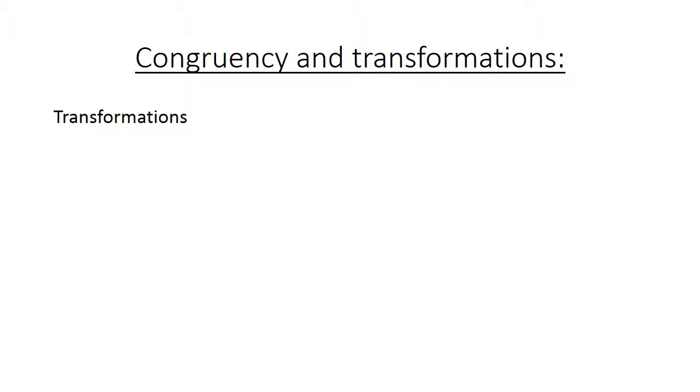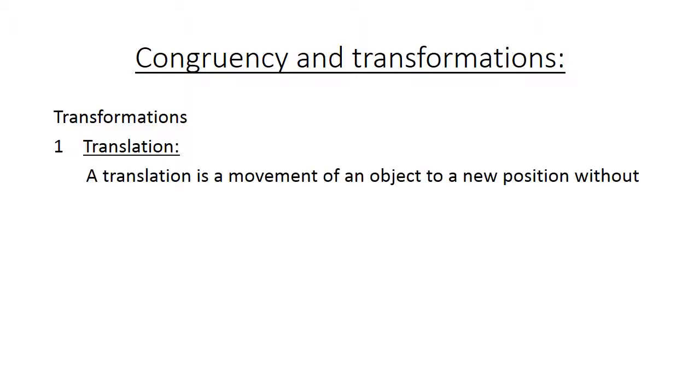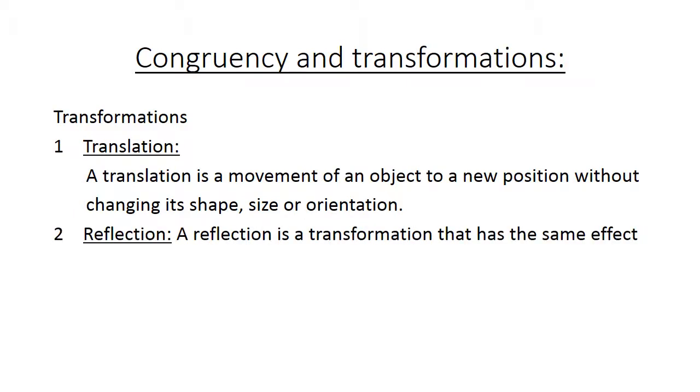Congruency and transformations. The first one is translation, which is a movement of an object to a new position without changing its shape, size, or orientation. Reflection: A reflection is a transformation that has the same effect as a mirror. In rotation, the image is turned around a fixed point.